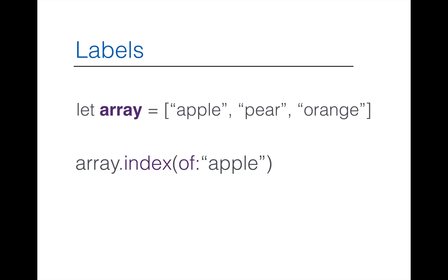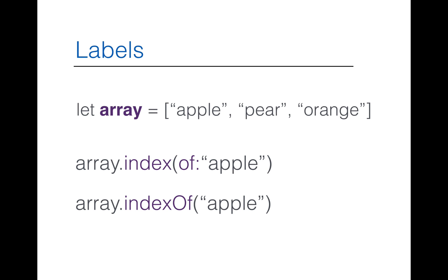The first parameter label is now required in Swift 3.0. You can read `of` — that is the label of the first parameter, which is now required. Previously with Swift 2.2, we used `indexOf` to get the index position of an object in a collection. But now with Swift 3.0, that becomes `index`, a shorter method name, and the first parameter label is required.